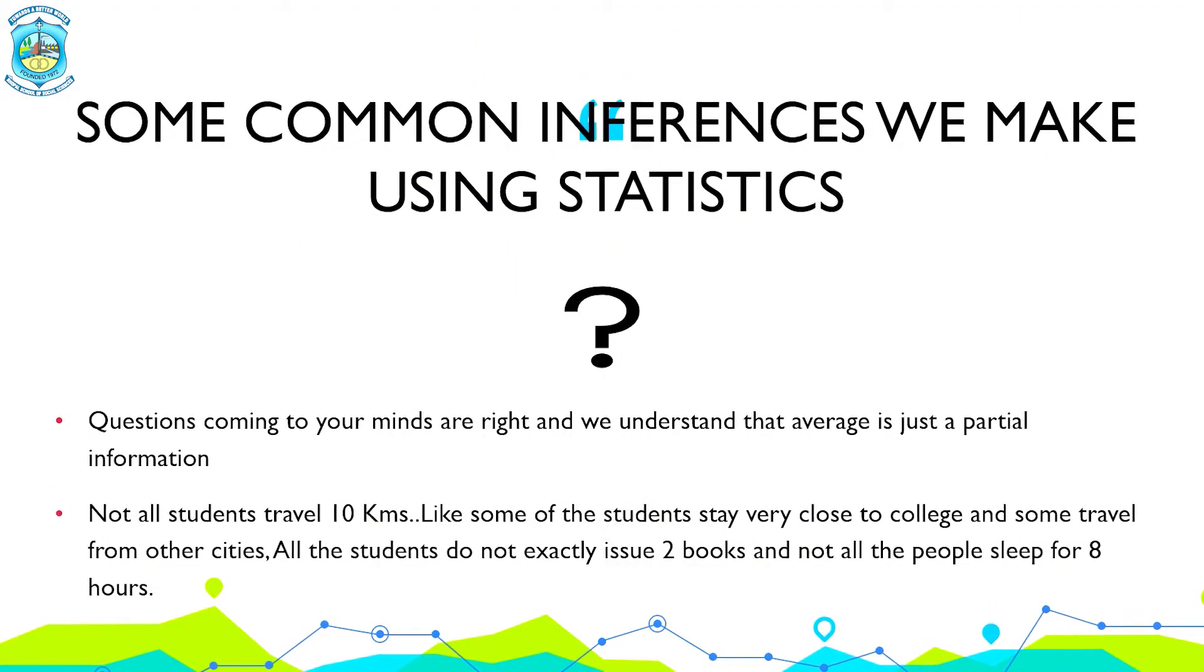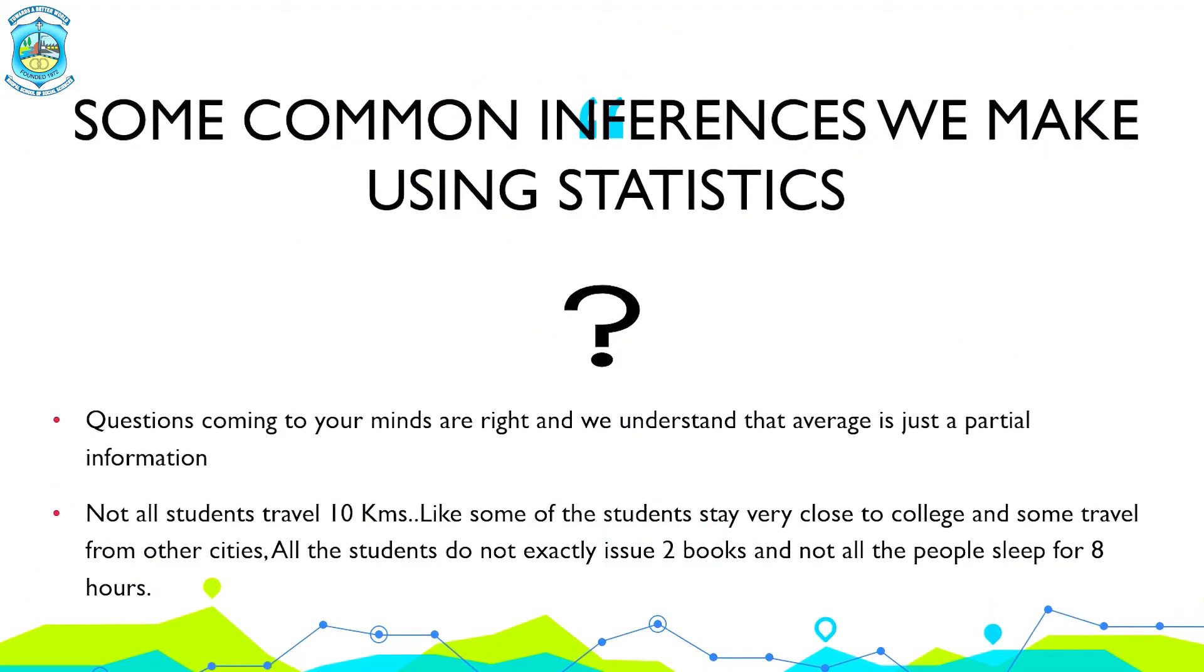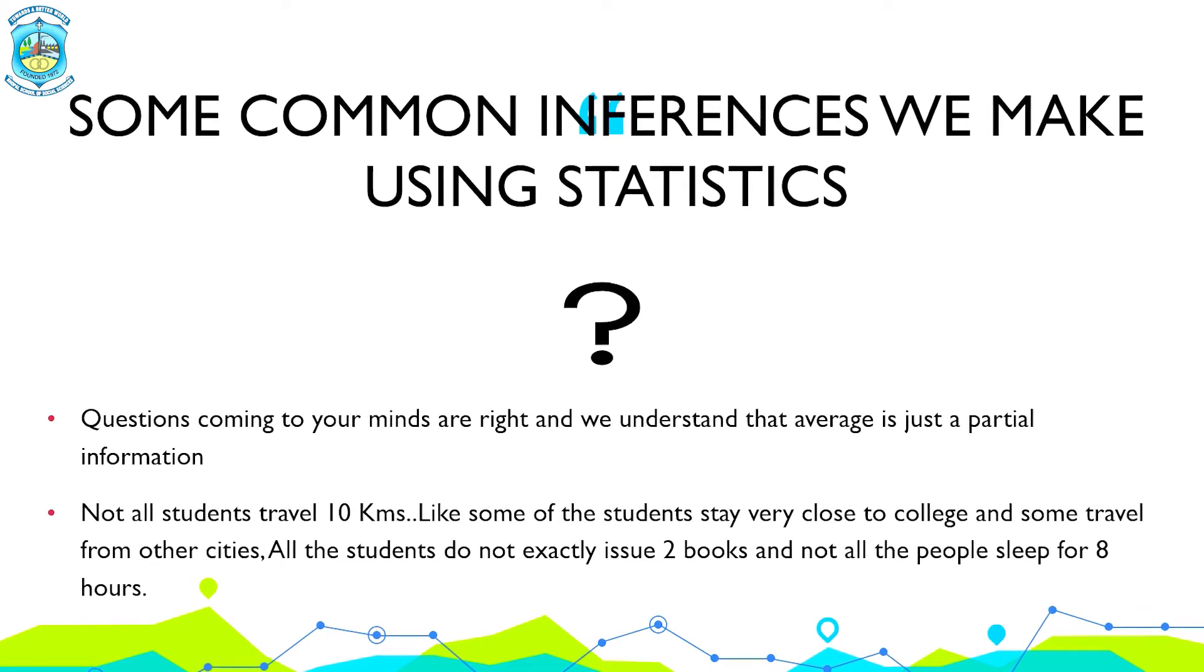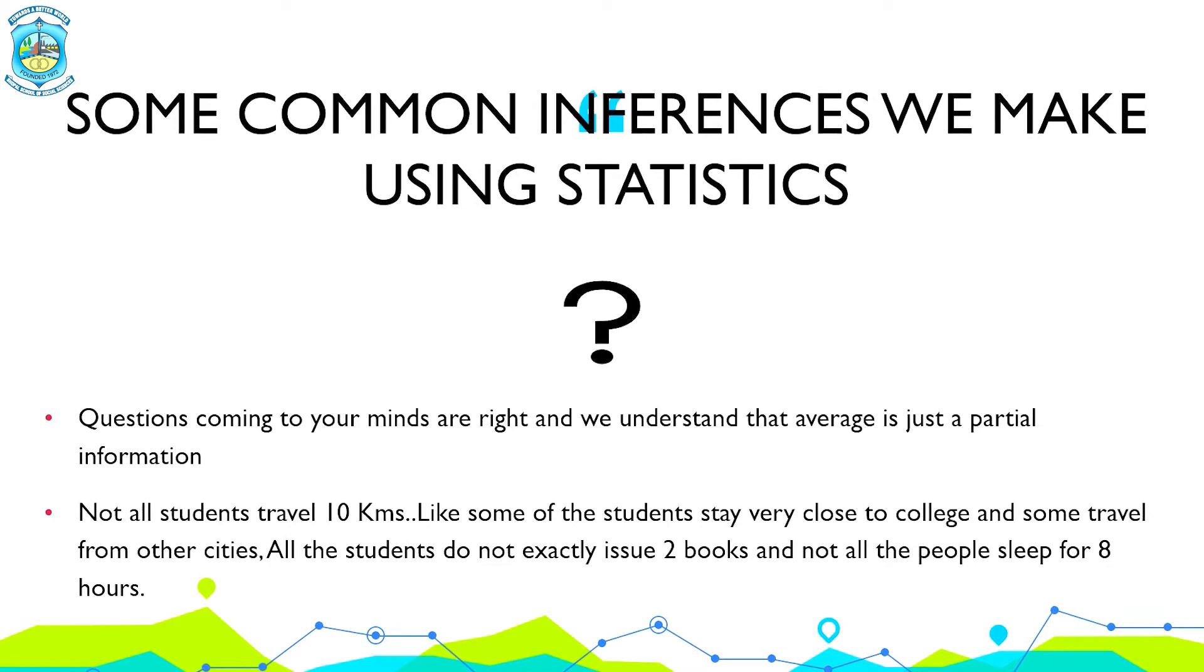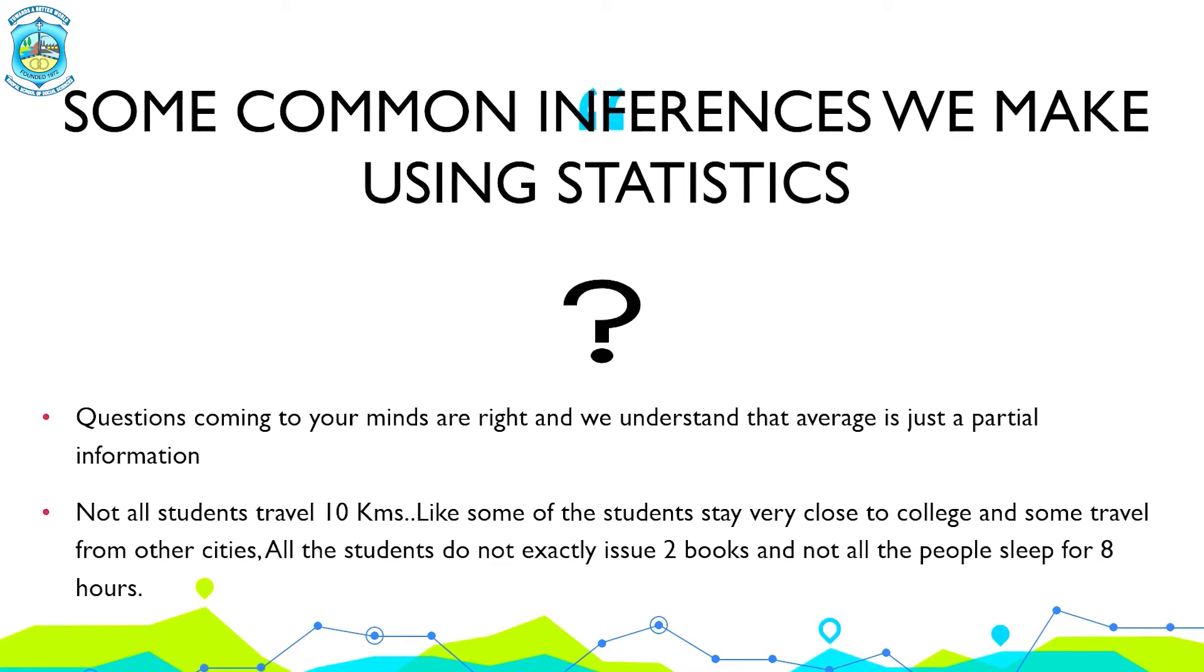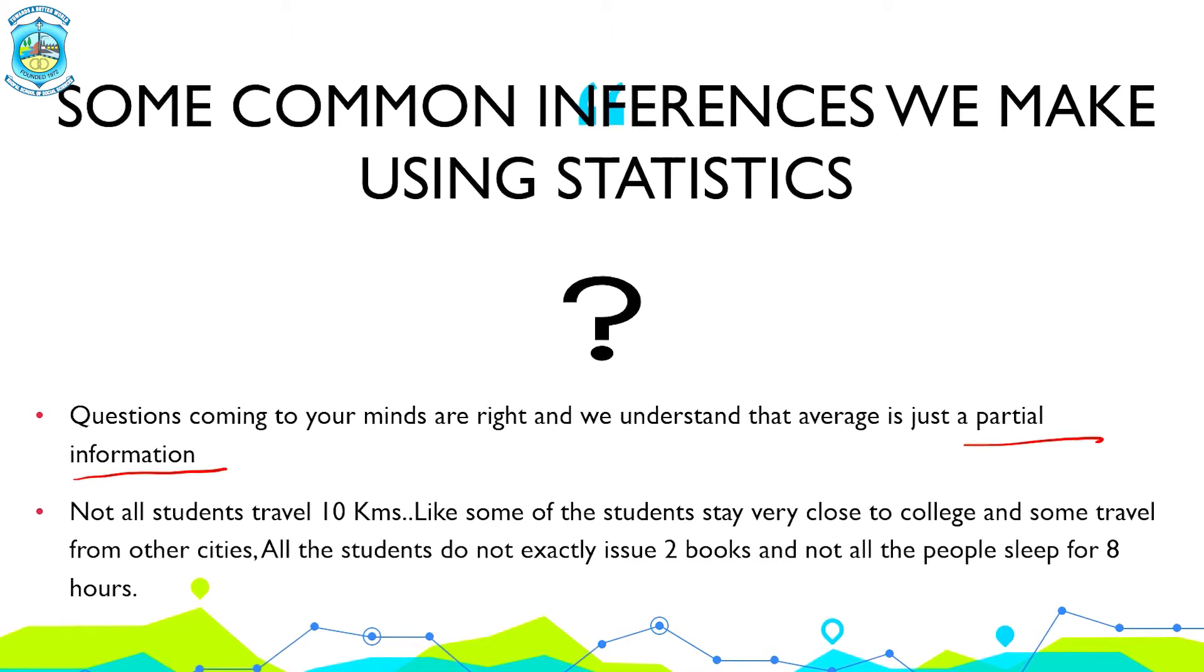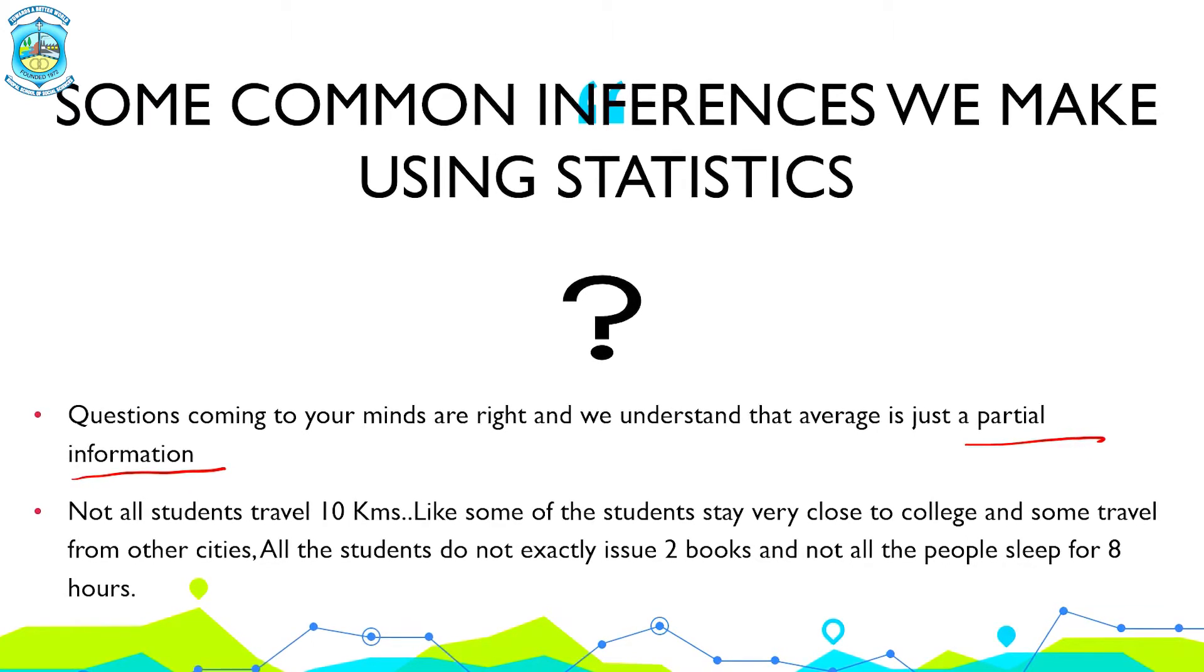So the question which might be coming into your mind is average telling us everything? You are absolutely right if you are thinking so because average is telling us something but not everything. It is just partial information. So how could we make it complete?